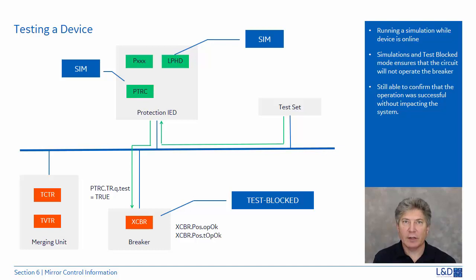However, no output will be generated since the logical node mode is set to test blocked. The output can be verified through data attribute XCBR.position.opok and the timing can be measured through the data attribute XCBR.pos.topok.